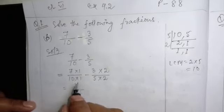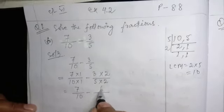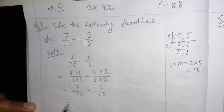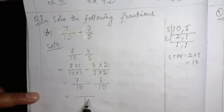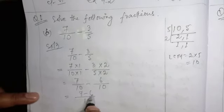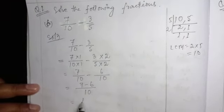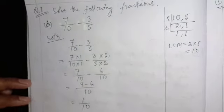7, 1 are 7, 10, 1 are 10, minus 3, 2 are 6, 5, 2 are 10. Now their denominators are same, then you just take common, then you can subtract their numerators. Equal to 1 by 10. Then we finish solving question number 1B.